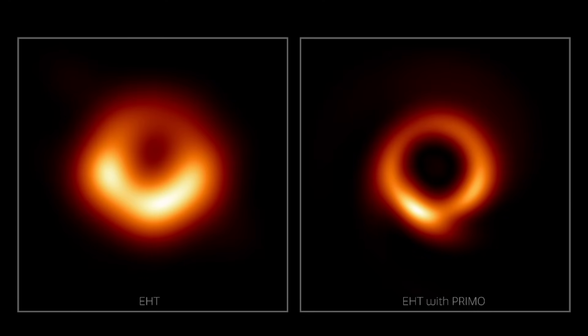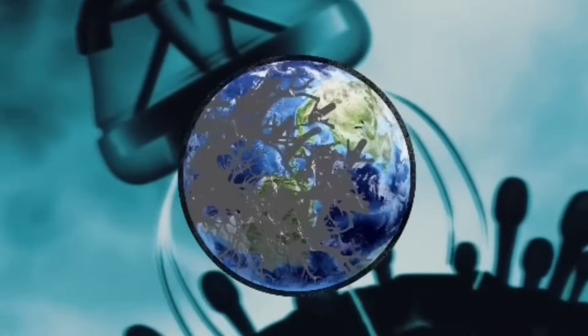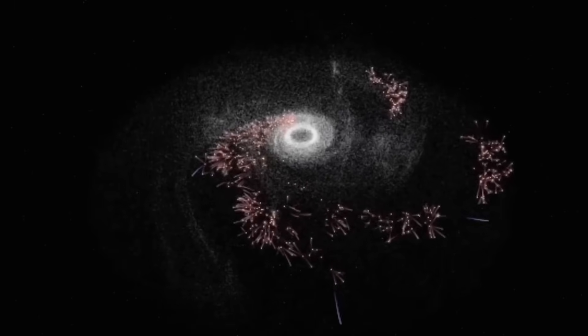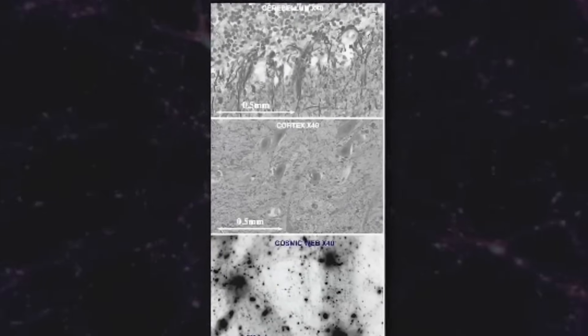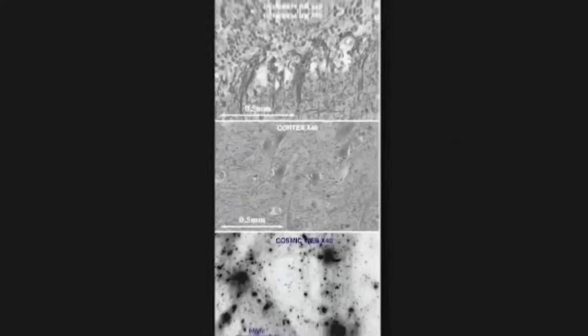Then came the pulses. Gravitational signals. Deep and ancient. Echoing in ways we still don't understand. Matching not only black hole mergers, but impossibly the resonance profile of the Moon's oldest crater. A crater formed billions of years ago. Now whispering back something no one expected to hear.